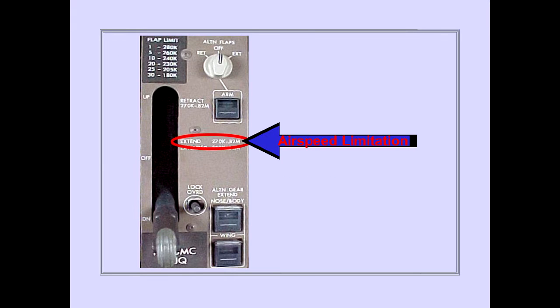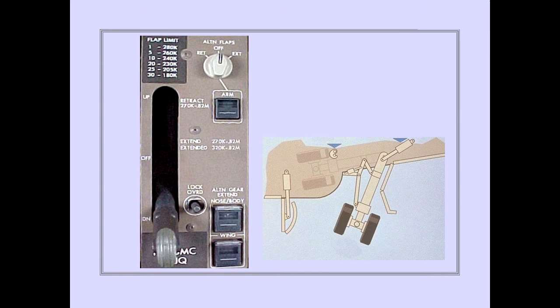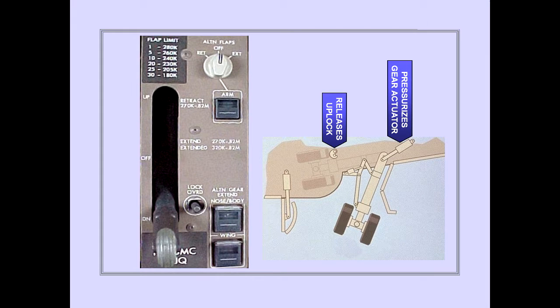The airspeed limitation for gear extension is 270 knots or 0.82 Mach. This airspeed limit prevents structural damage to the gear doors. Placing the gear lever down pressurizes the gear door actuators to open the gear doors. When the doors open, hydraulic pressure releases the gear up locks and pressurizes the gear actuators. The gear move to the down and locked position and the doors close.